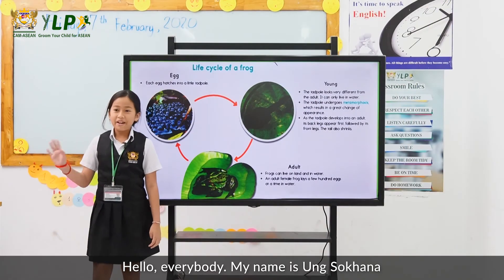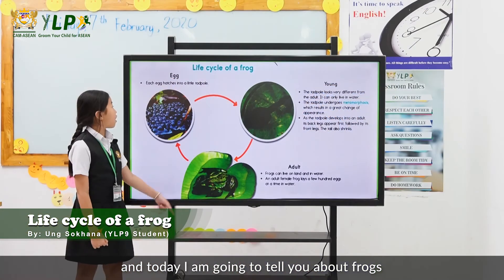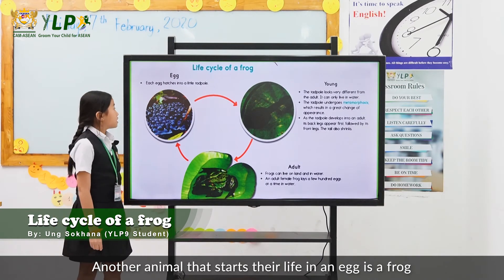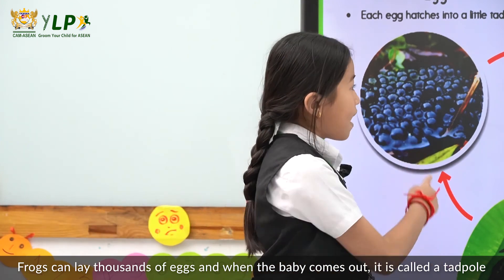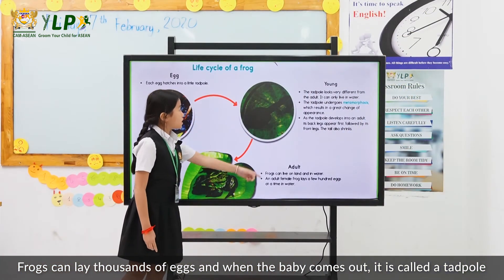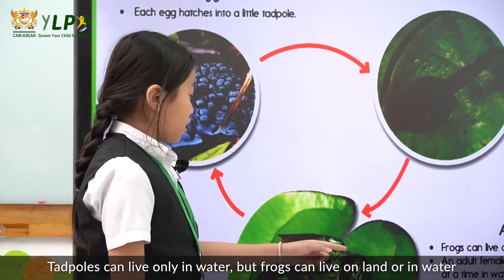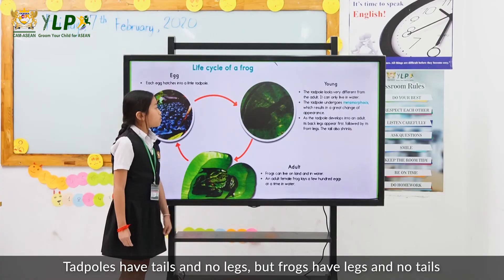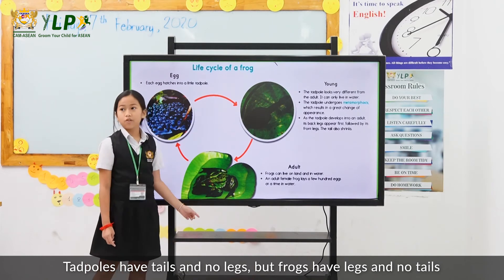Hello everybody, my name is Ansokana and today I'm going to tell you about frogs. Another animal that starts their life in an egg is a frog. Frogs lay thousands of eggs, and when the baby comes out it's called a tadpole. Tadpoles can live only in water, but frogs can live on land and in water. Tadpoles have tails and no legs, but frogs have legs and no tails.